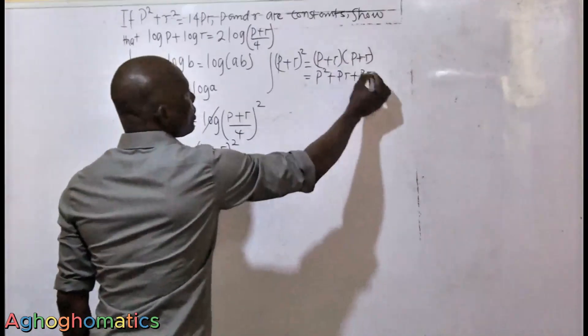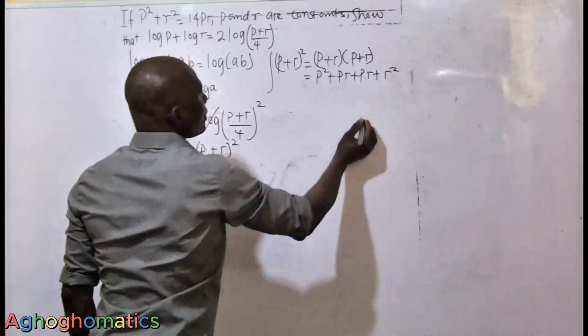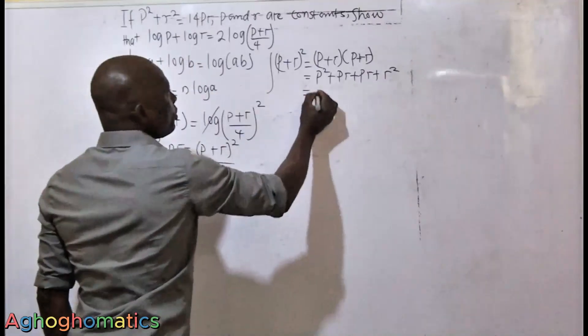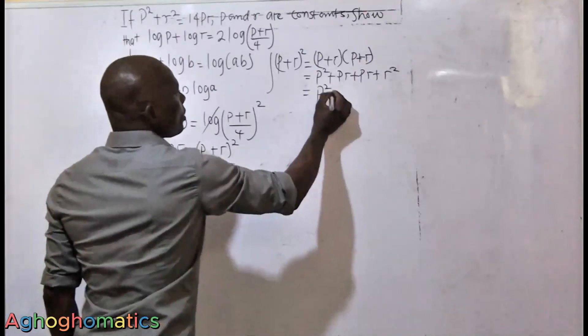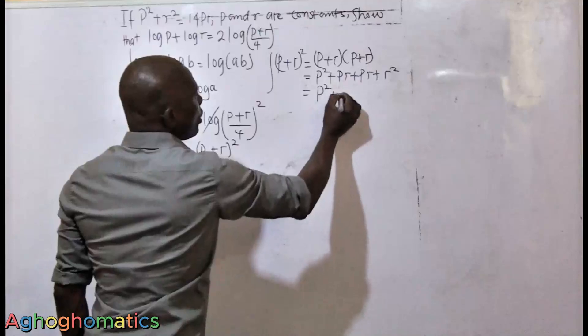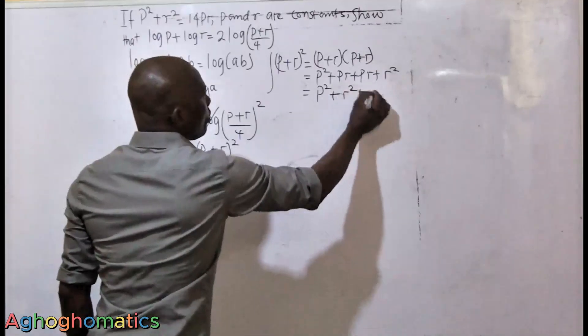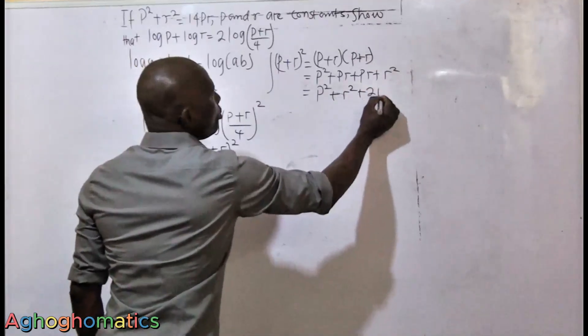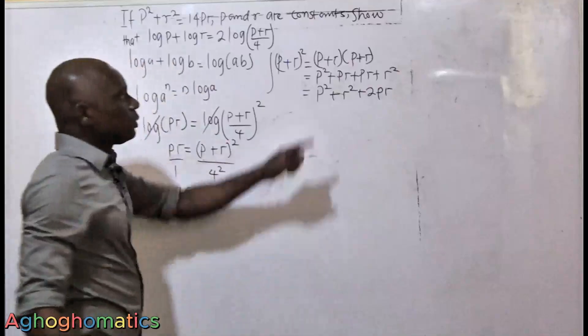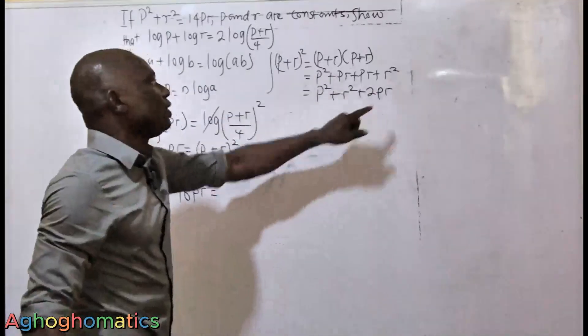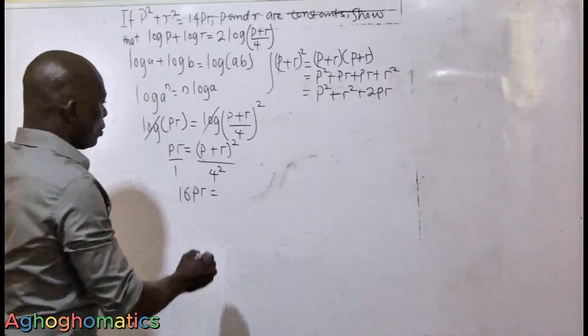So here becomes P squared plus R squared plus 2PR. PR plus PR is 2PR, so this becomes P squared plus R squared plus 2PR.